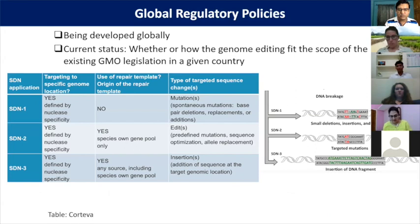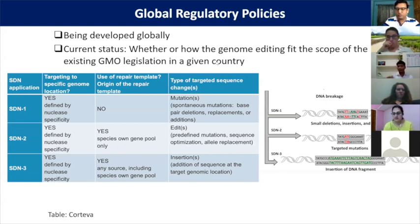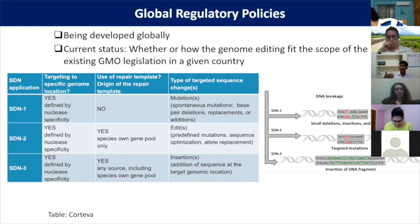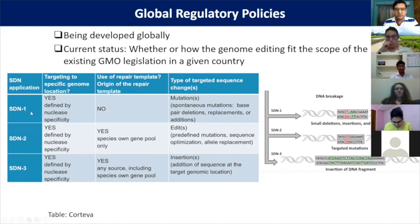If I want to give you a snapshot of how the global community is actually seeing it, they divided the genome-editing-derived crops or organisms into three different types: SDN1, SDN2, and SDN3.